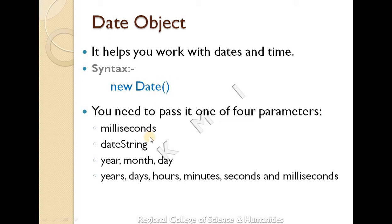The date object accepts four types of parameters: milliseconds, a date string, or year/month/day, or a full format of year, month, day, hours, minutes, seconds, and milliseconds.